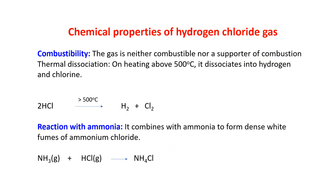Chemical properties of HCl gas — combustibility: the gas is neither combustible nor a supporter of combustion. Thermal dissociation: on heating above 500 degrees centigrade, HCl dissociates into hydrogen and chlorine — 2HCl above 500 degrees centigrade dissociates into H2 and Cl2. Reaction with ammonia: HCl combines with ammonia to form dense white fumes of ammonium chloride — NH3 gas plus HCl gas gives NH4Cl.